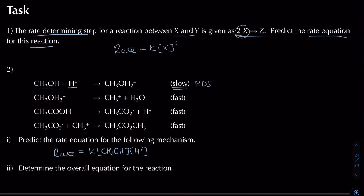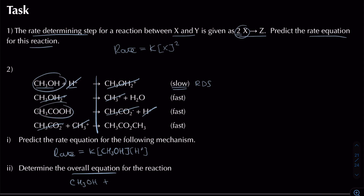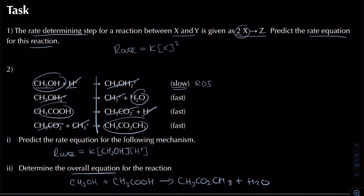The next question: determine the overall equation for the reaction. Split it down the middle and cancel what's on the left with what's on the right. H⁺ cancels with H⁺, CH₃OH₂⁺ cancels, CH₃ cancels, and CH₃CO₂⁻ cancels as well. Our overall equation has methanol (CH₃OH) reacting with ethanoic acid to form an ester — which is actually from module 6 — and water as well. So that's our overall equation.